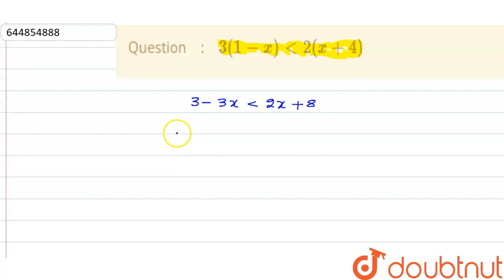So basically this equals 5x > 3-8, that is -5. So x greater than... sorry, this x greater than is -5 upon 5, that is -1.